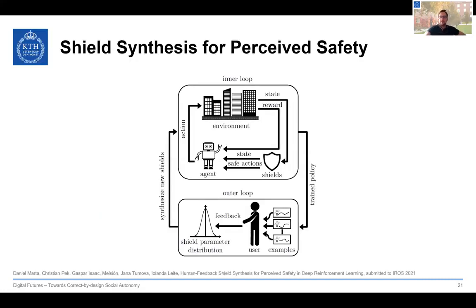Now I would like to talk about reinforcement learning and perceived safety. My colleagues used shield synthesis for perceived safety, integrating it into the reinforcement learning framework. With formal methods, we can design formal specifications and from them generate a shield that filters out unsafe actions. Here, instead of using the designer's specification, we want to synthesize shields based on perceived safety. To do so, the reinforcement learning loop is modified to contain two loops.